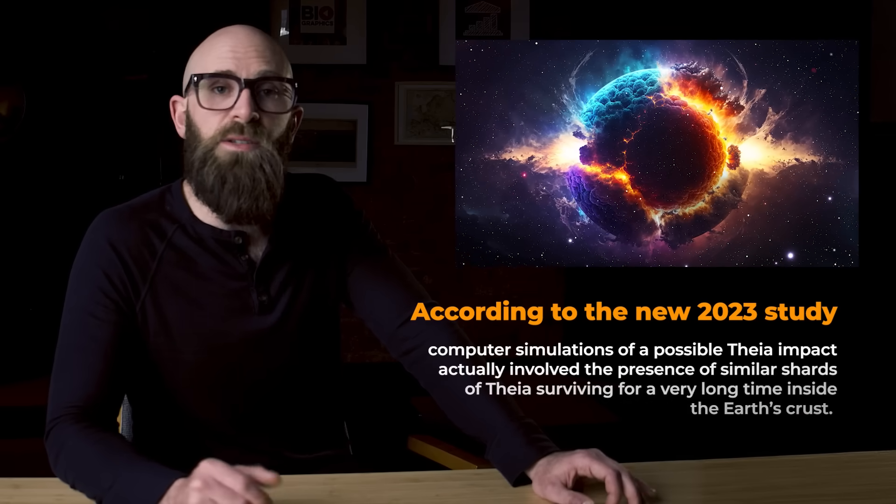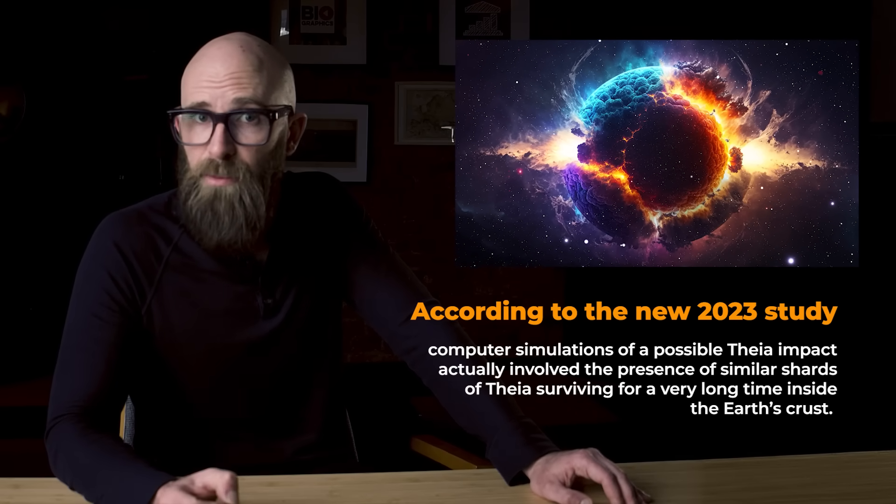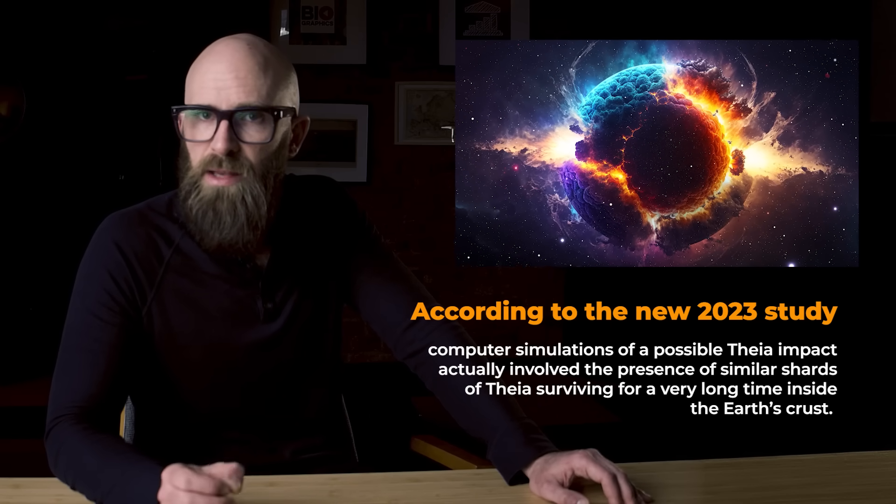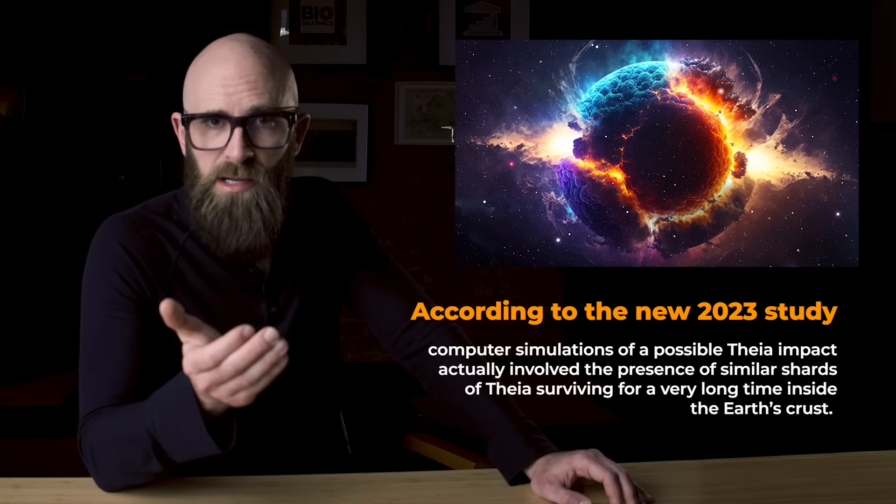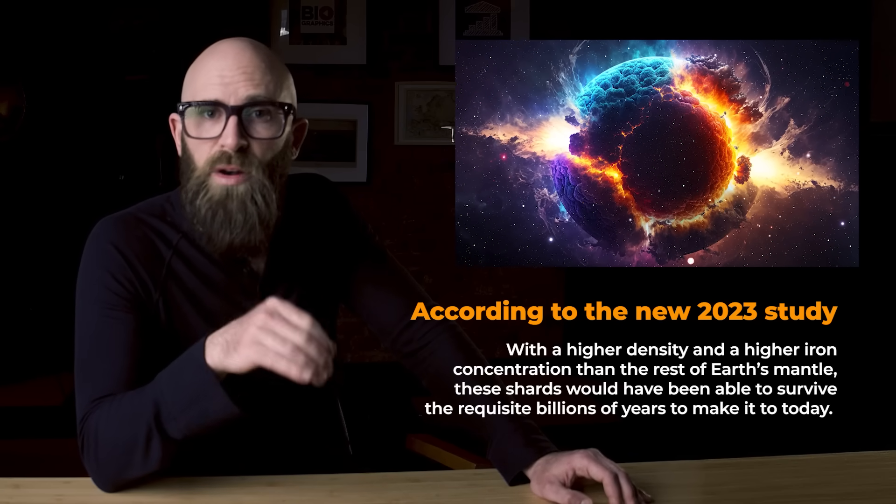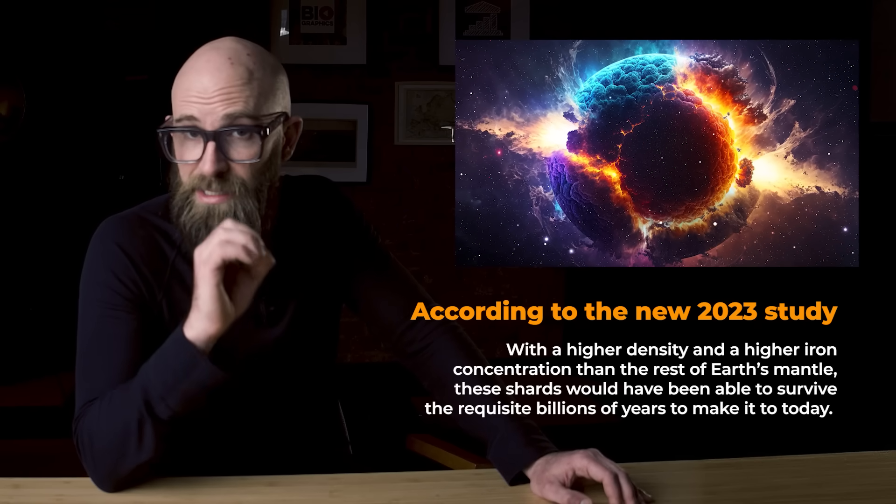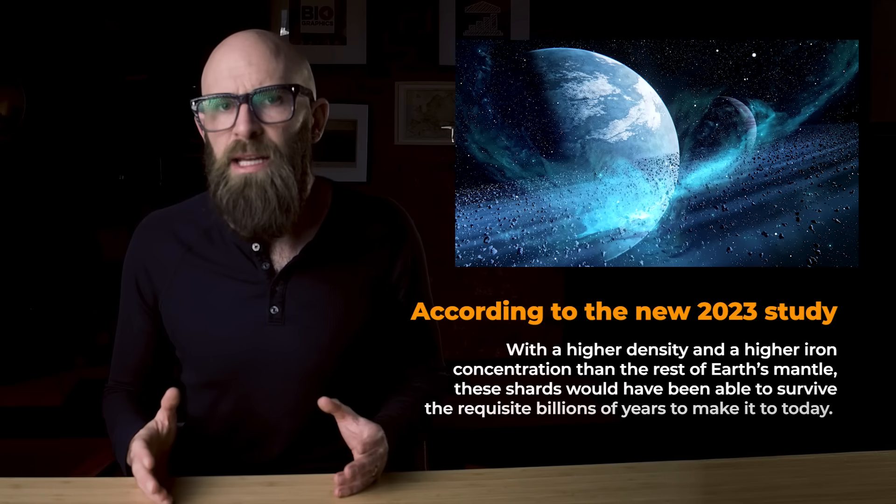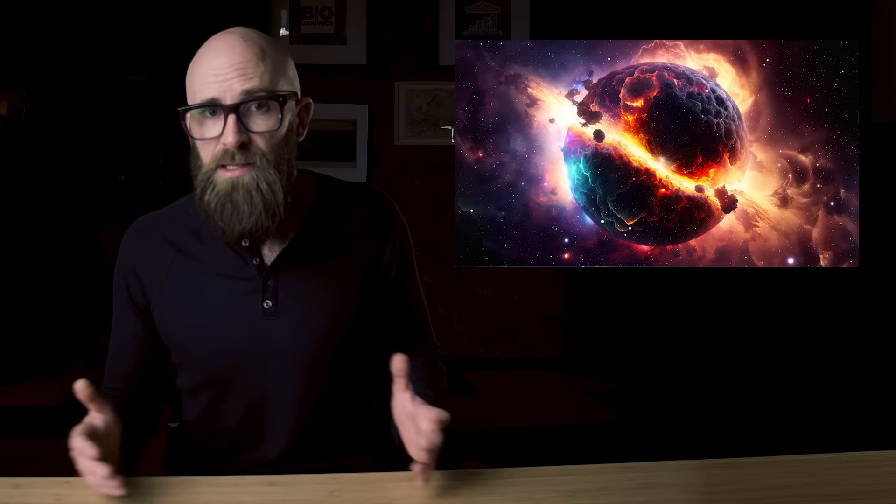According to the new 2023 study, computer simulations of a possible Theia impact actually involved the presence of similar shards of Theia surviving for a very long time inside the Earth's crust. With a higher density and higher iron concentration than the rest of Earth's mantle, these shards would have been able to survive the requisite billions of years to make it to today. And it's not inconceivable that they might not have been able to reach and completely fuse with the Earth's core either, while Earth's outer mantle would have been relatively easy to pass through at impact velocity, the lower mantle being made up of highly pressurized viscous and almost gooey magma, could have had a similar effect on these crashing pieces of Theia's core to the effect that you might see if you throw a decent-sized rock into a vat of thick mud.